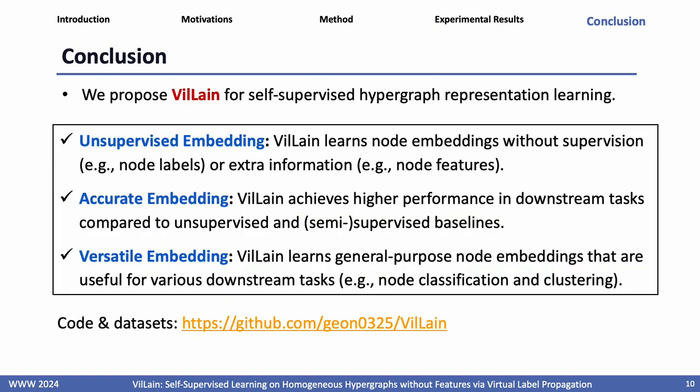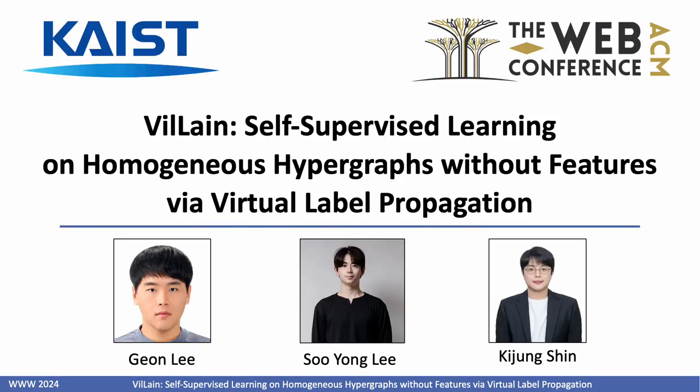In conclusion, we propose VILLEN for self-supervised hypergraph representation learning. It generates node embeddings in hypergraphs without node features, and they are versatile and accurate. Code and datasets are available at GitHub. Thank you for listening.